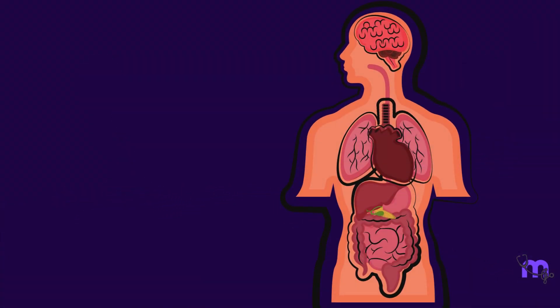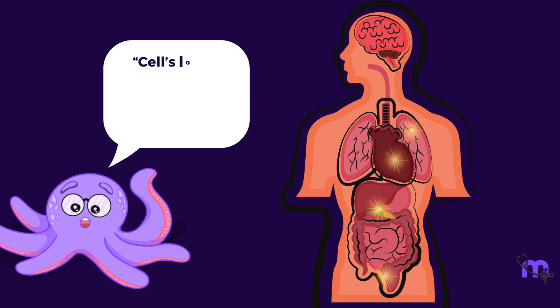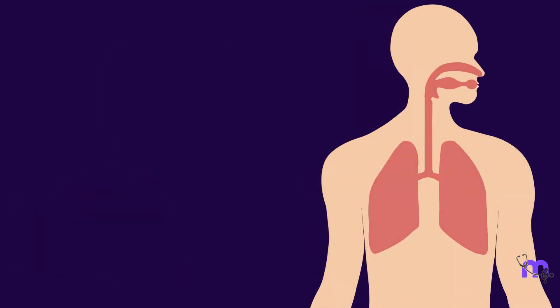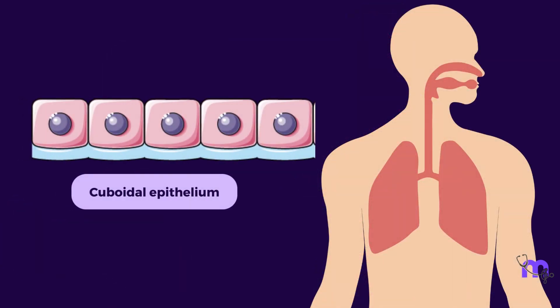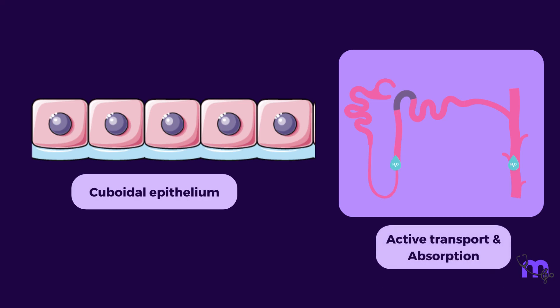Now we just learned that cuboidal epithelium is widely distributed in the body. However, while they may look similar in all these areas, functionally they are very different. For example, cuboidal epithelium on glands is only for secretion of mucus or serous fluid. But when they line the tubules of the kidneys, their function is active transport and absorption.